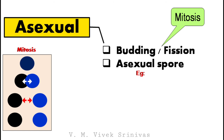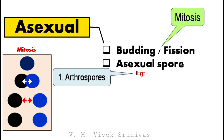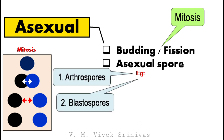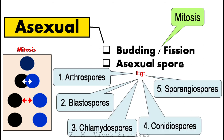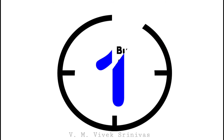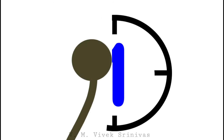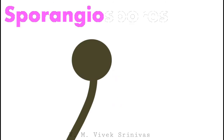Examples of asexual spores are arthrospores, blastospores, chlamydospores, conidiospores, and sporangiospores. First we will see about sporangiospores.